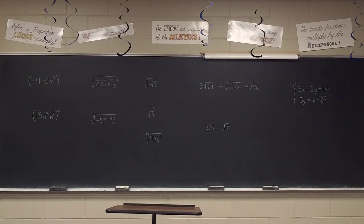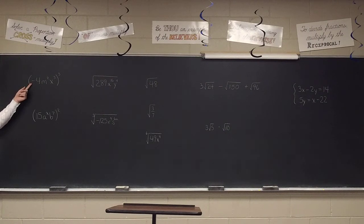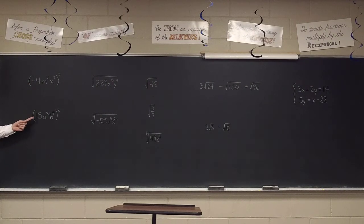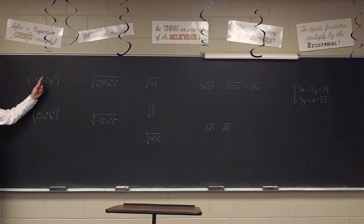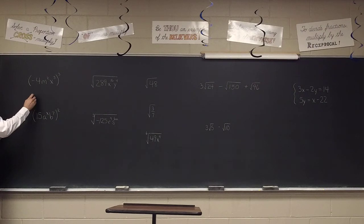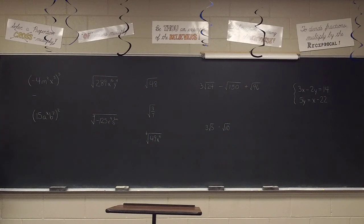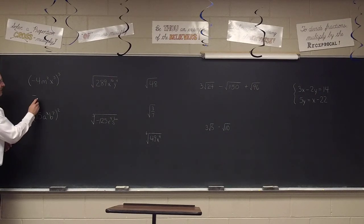When you raise a power to a power, multiply the exponents. When you raise a negative to an even power, you get a positive. But if you raise a negative to an odd power, you end up with a negative answer. The only time you'll ever end up with a negative is a negative to an odd power. With the 4, you're not multiplying 4 times 3 — you're raising 4 to the third power, which means 4 times 4 times 4, which we memorized: 64.